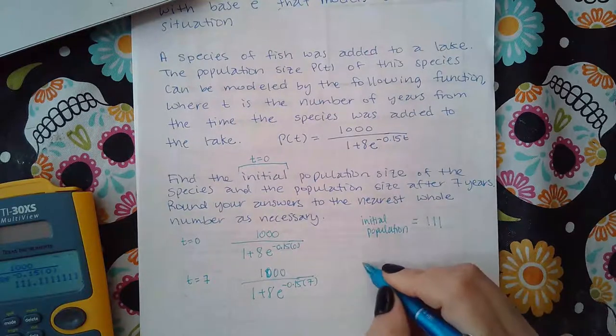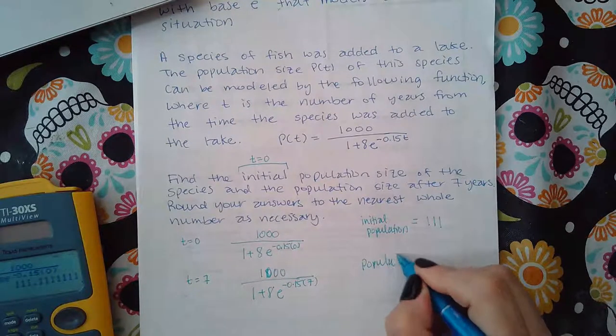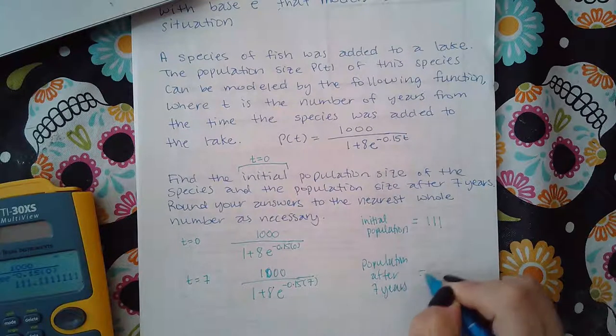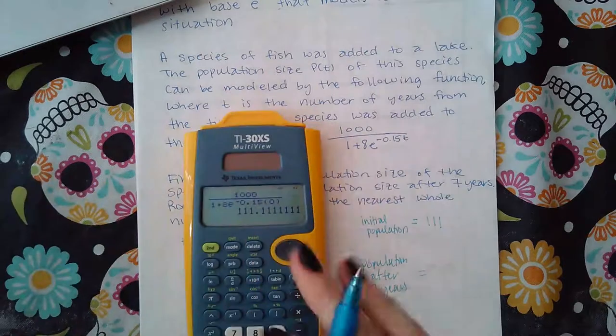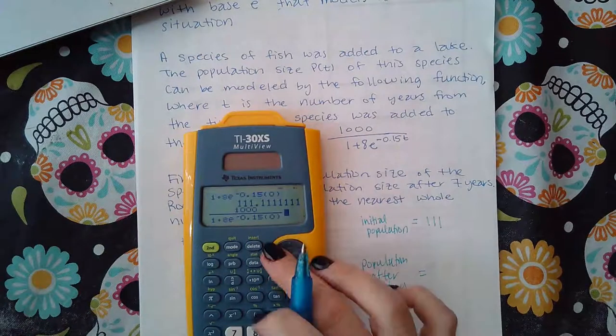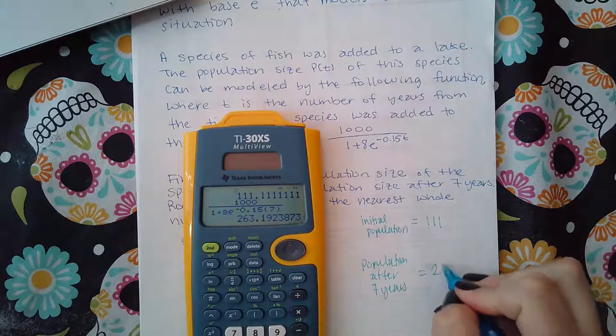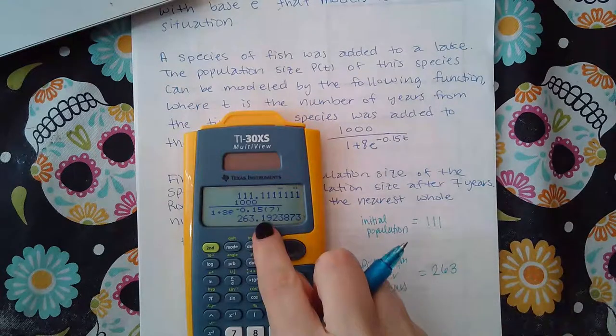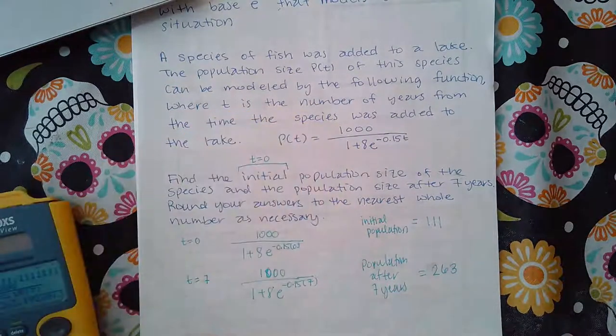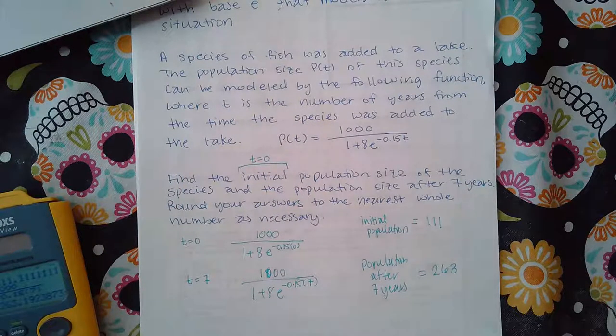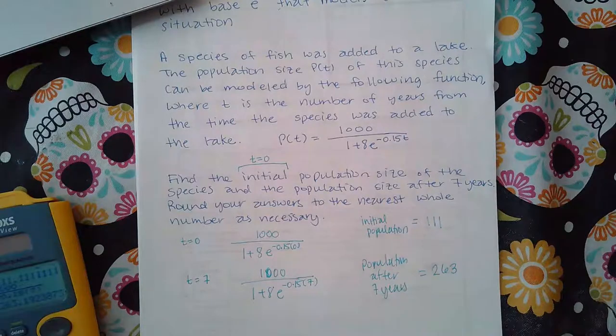And so this is the population after seven years. Let's see what that is. It's the same function, I'm just plugging in a seven instead of a zero. And now I get 263. So now after seven years it's 263 fish that are in this lake.